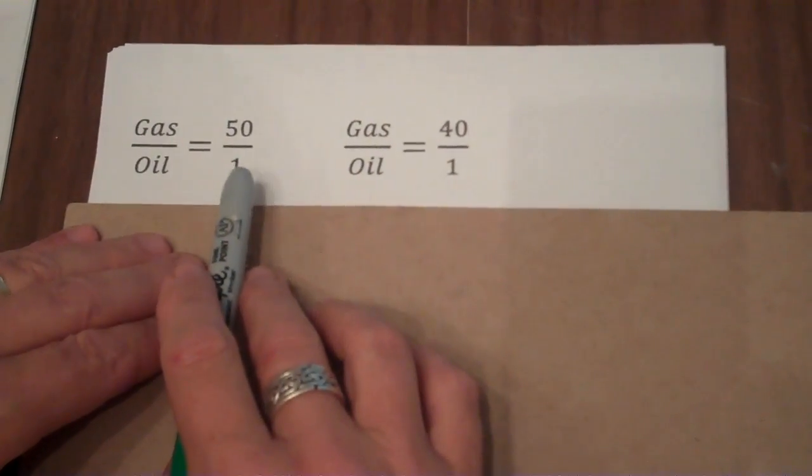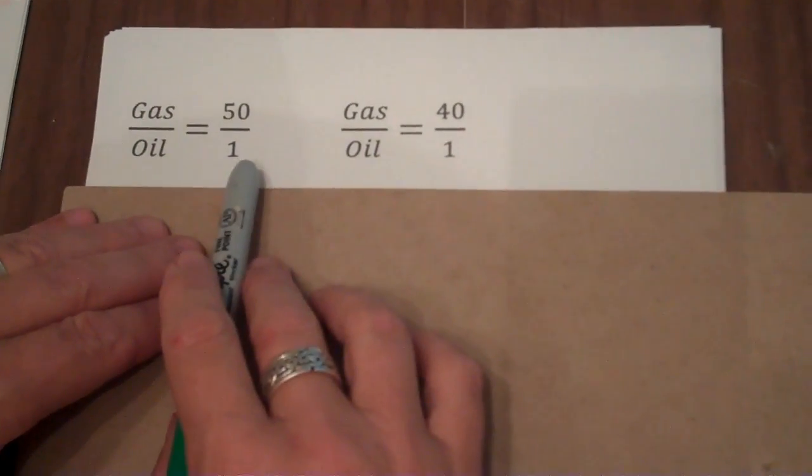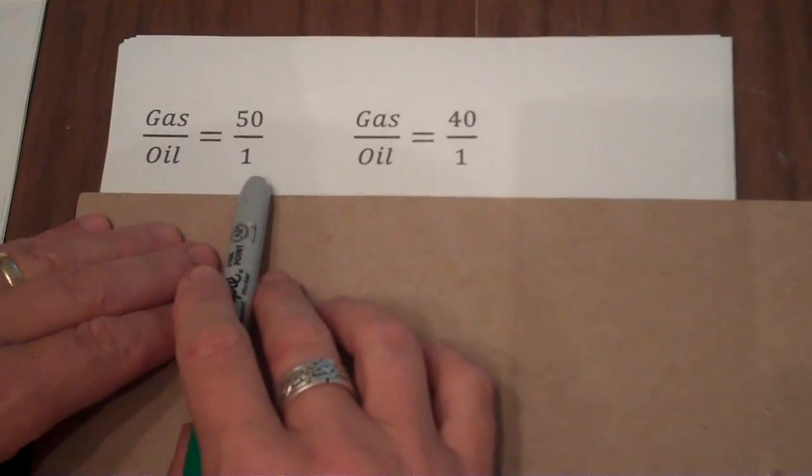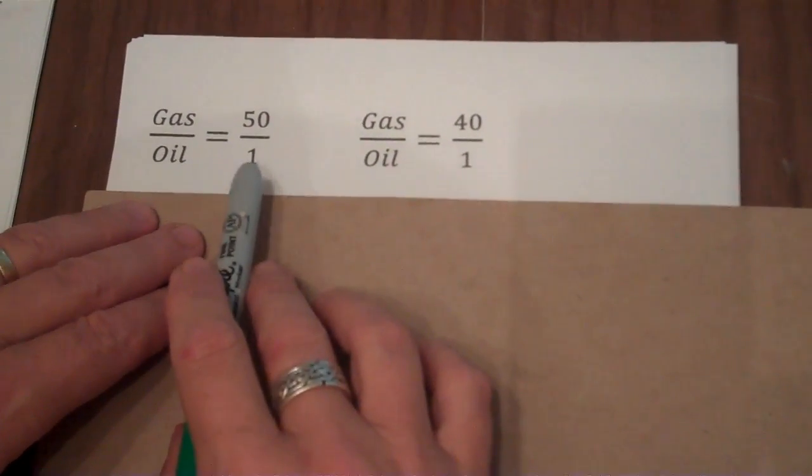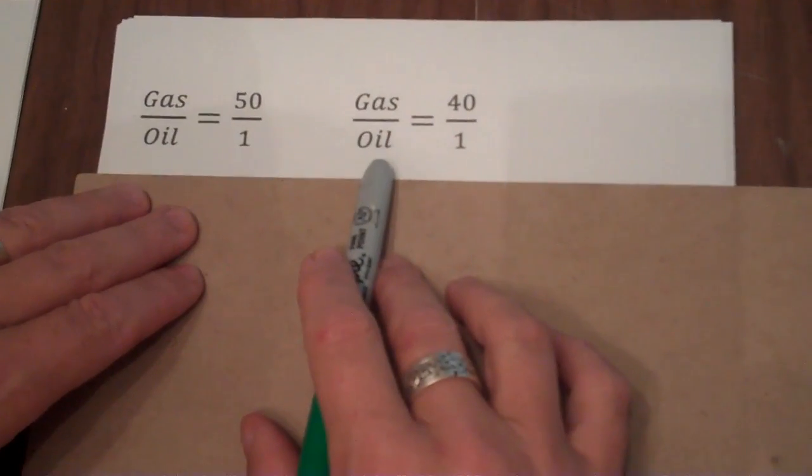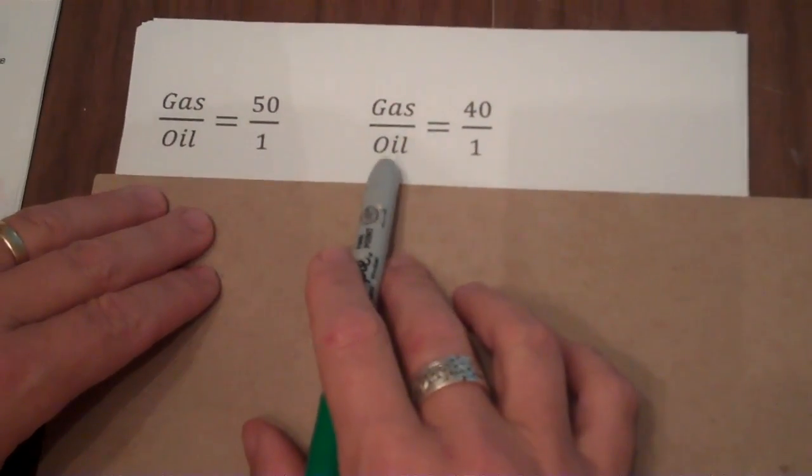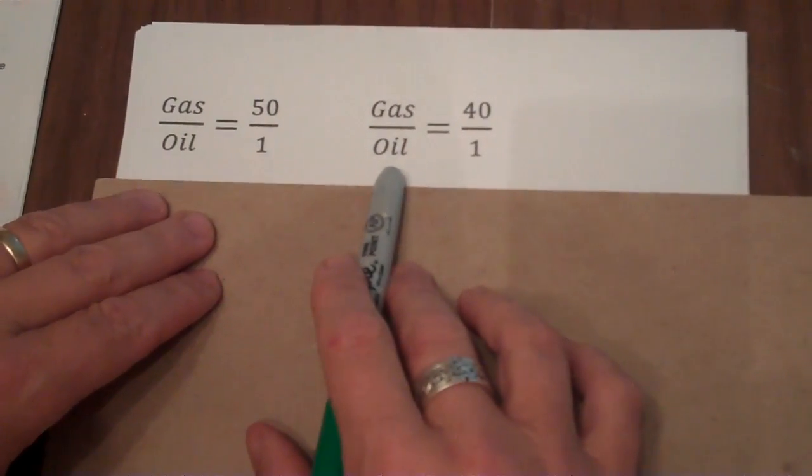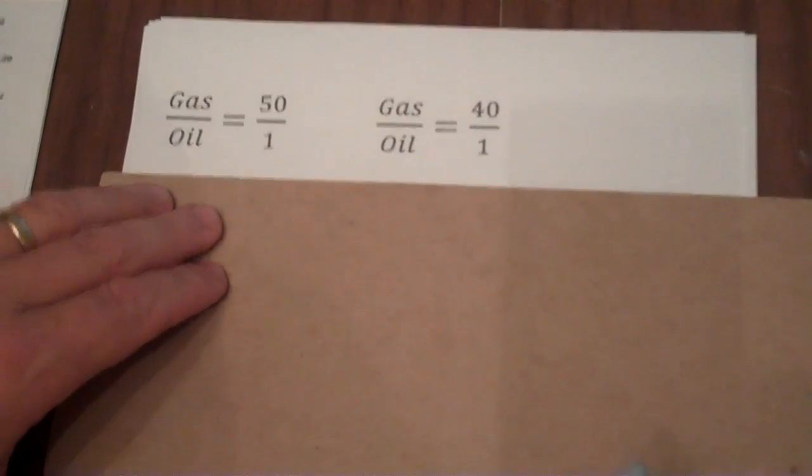Now the assumption is that the 5 gallons is the total mixture, not that you had 5 gallons to begin with, but the total of the gas and oil is 5 gallons. My question was how much oil do you have to add to that gas oil mixture to reduce the ratio of gas to oil to 40 to 1?